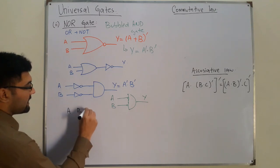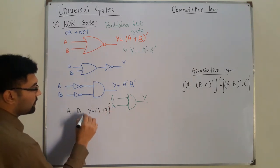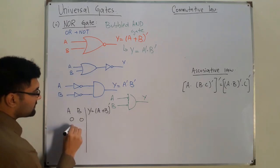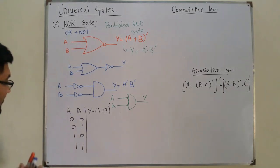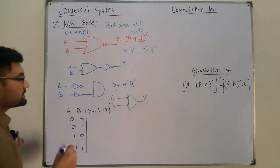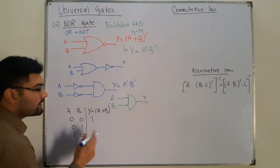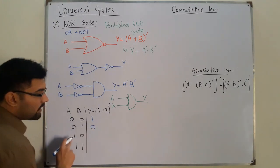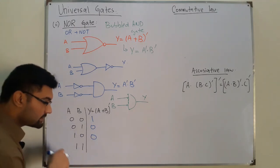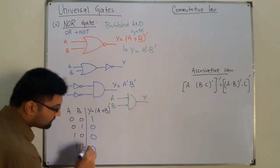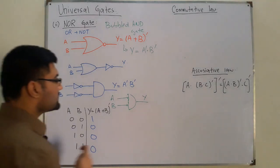Now the truth table for the NOR gate: inputs A and B, output Y = A OR B whole complement. Input combinations 00, 01, 10, 11. Zero OR zero is zero, complement is one. Zero OR one is one, complement is zero. One OR zero is one, complement is zero. One OR one is one, complement is zero.